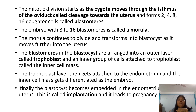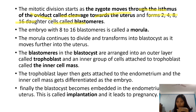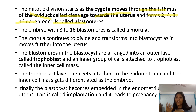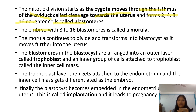The mitotic division starts as the zygote moves through the isthmus of the oviduct — this is called cleavage — towards the uterus, and forms 2, 4, 8, 16 daughter cells called blastomeres. The embryo with 8 to 16 blastomeres is called a morula.